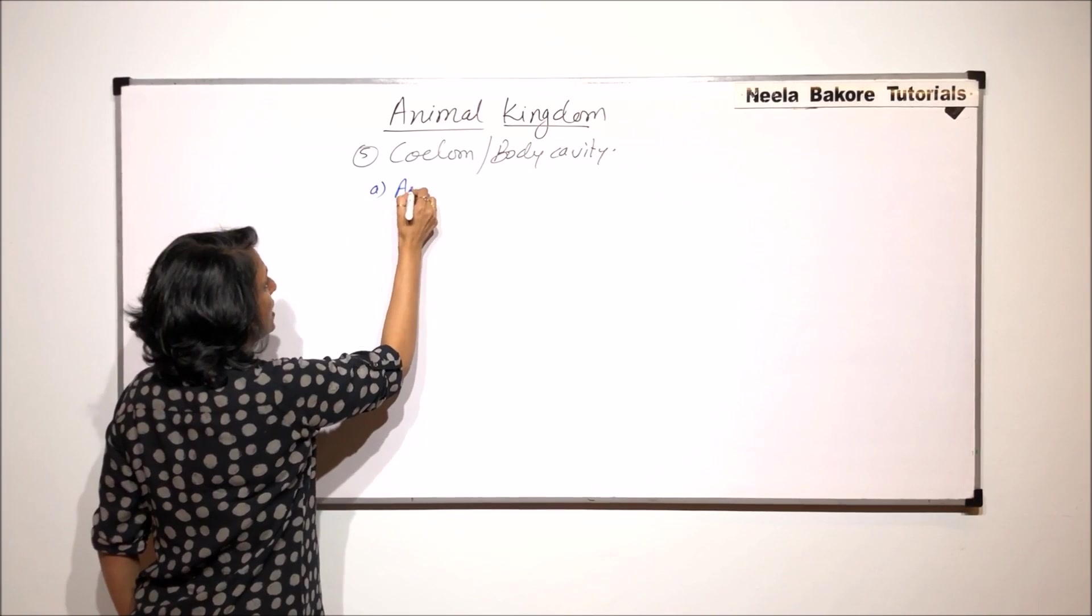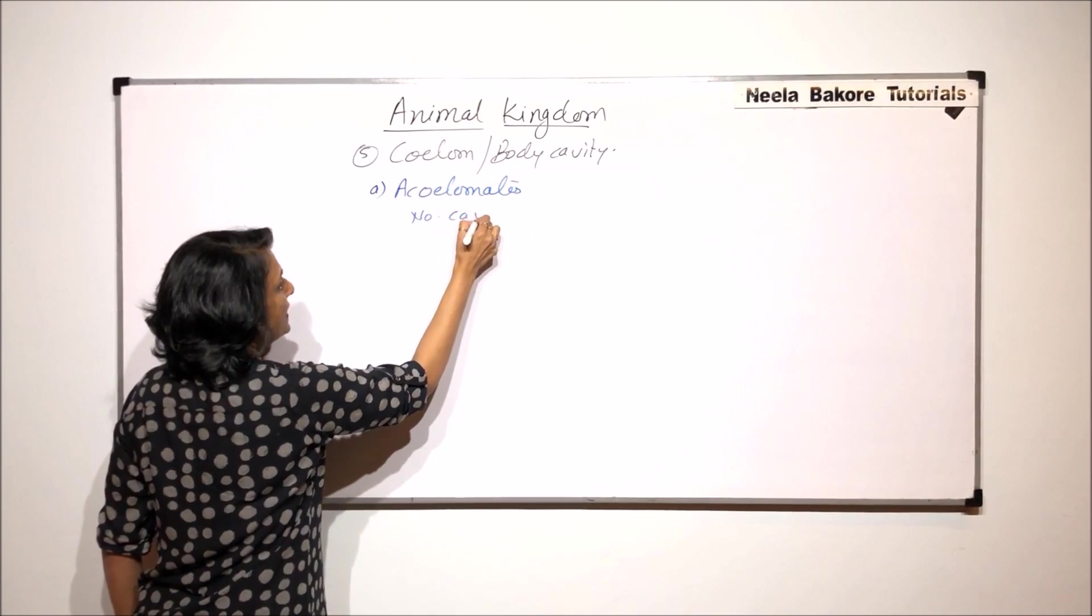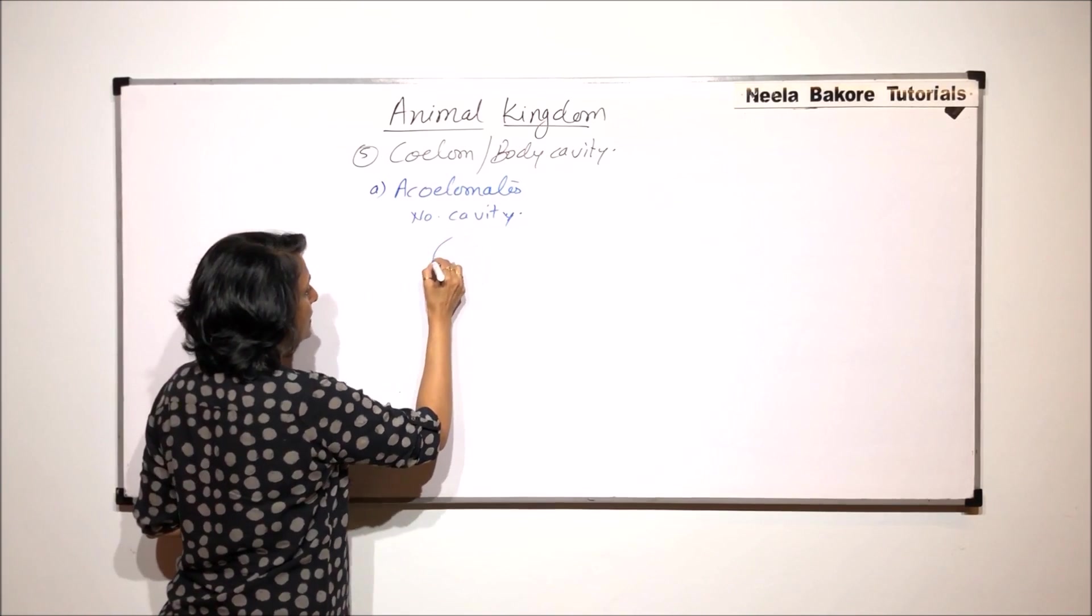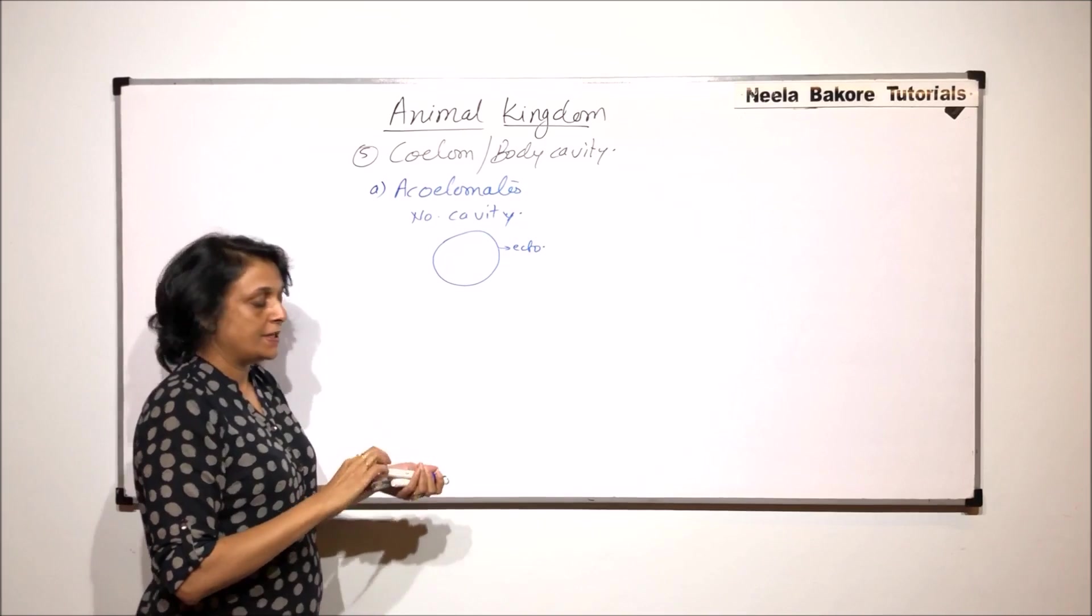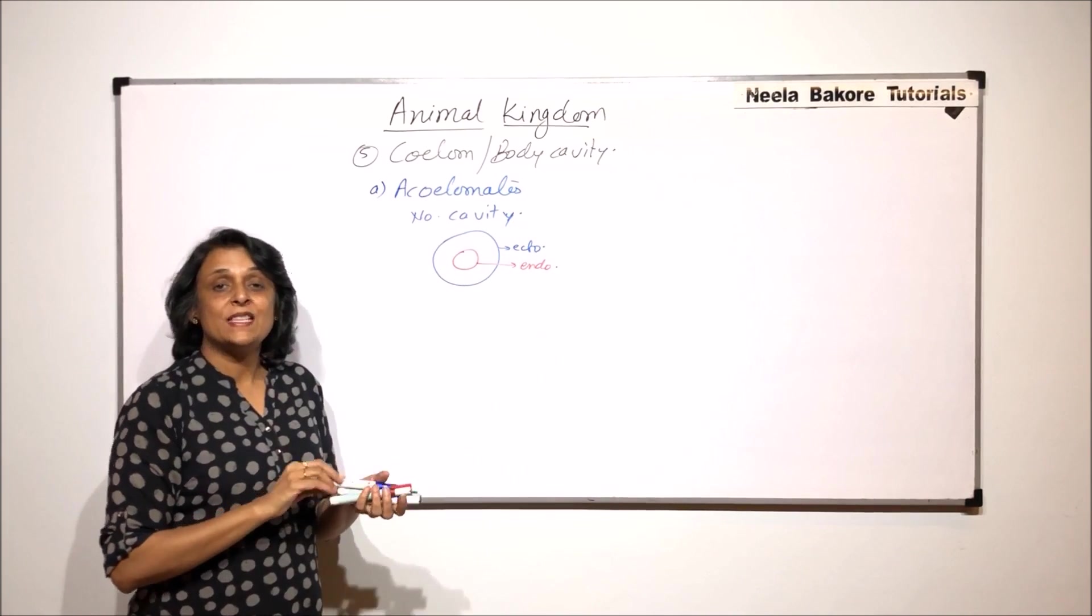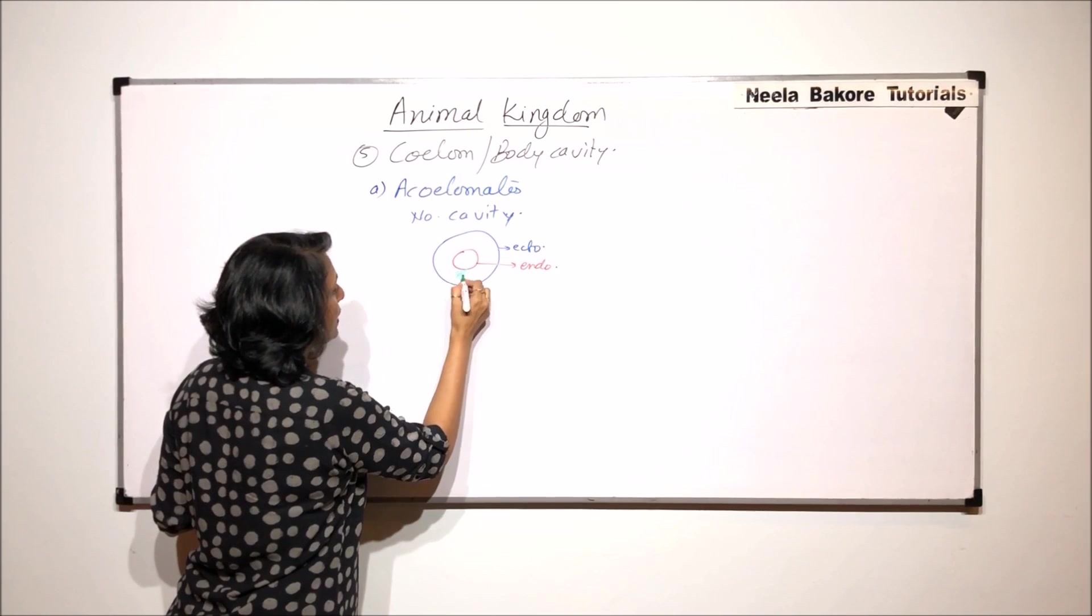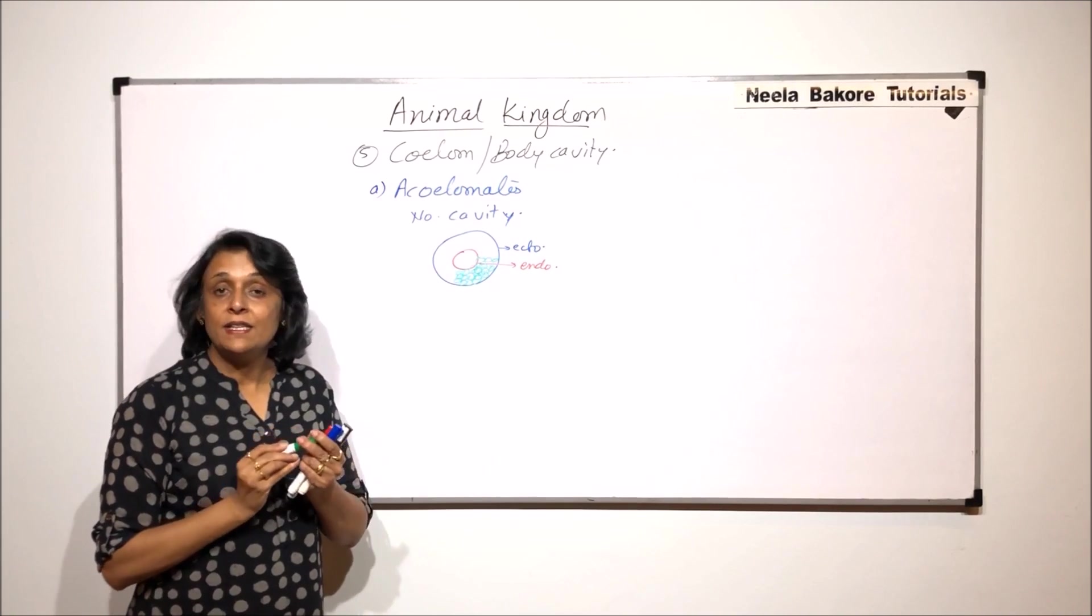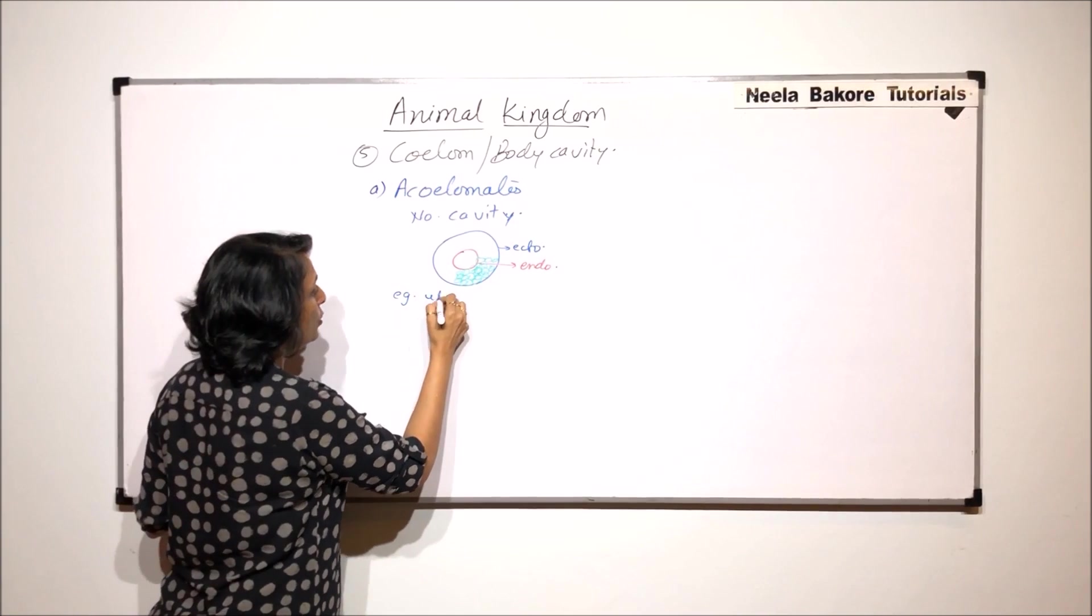We can have organisms which are acoelomates. Acoelomates means there is no cavity, or in other words, we can say that this cavity is filled with cells. Let us say this is the outermost layer, that is the body wall, it is made up of ectoderm. The inner one, which is the lining of the alimentary canal, this is the endoderm. Now, the space between these two layers is the body cavity. If this cavity doesn't exist, or in other words, if there are cells which are filled inside, such organisms are termed as acoelomates. That means there is no body cavity, and in this we take the example of all the animals up to flatworms.